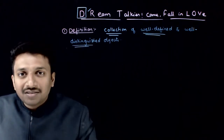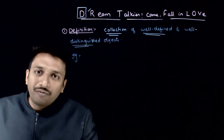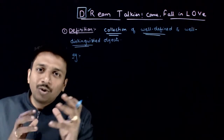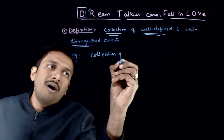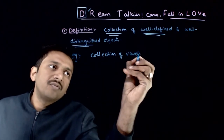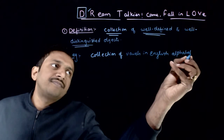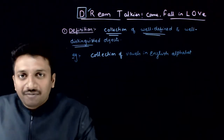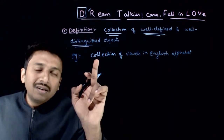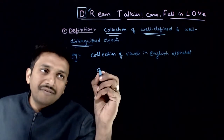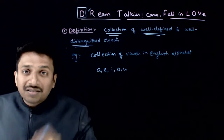There are two key words in this definition. We are talking about a collection of objects — you know that a collection is a group of objects. For example, I am talking about a collection of vowels in the English alphabet. Is this set well-defined? In the collection of vowels in English, you have five letters: A, E, I, O, and U.